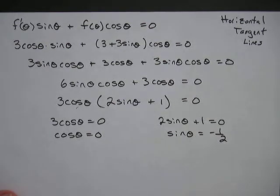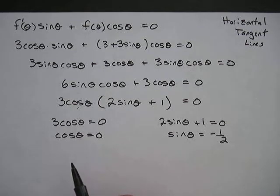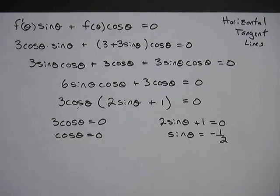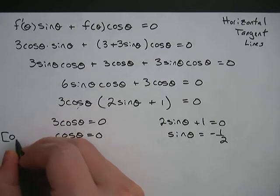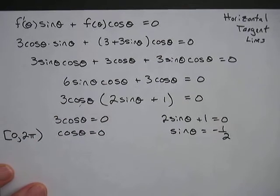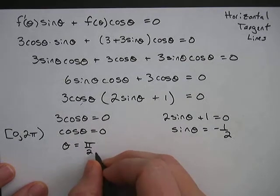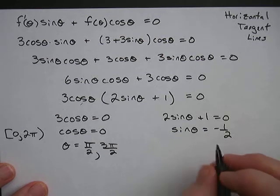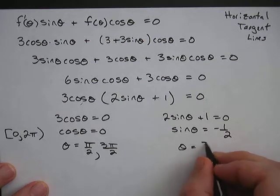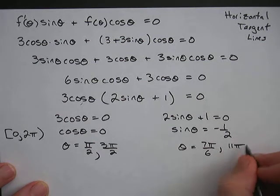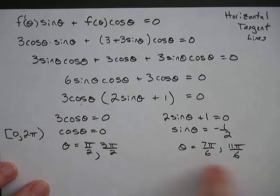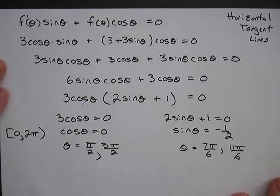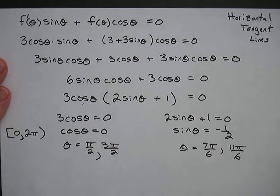Now we figure out where these are on the unit circle, going from 0 to 2π. Where cosine equals 0: theta is pi/2 and 3pi/2. Where sine equals negative 1/2: theta is 7pi/6 and 11pi/6. That gives us our theta values for which the numerator is equal to 0. But we're not done yet — the problem says find the points, so we still need the r values, since points in polar are (r, θ).